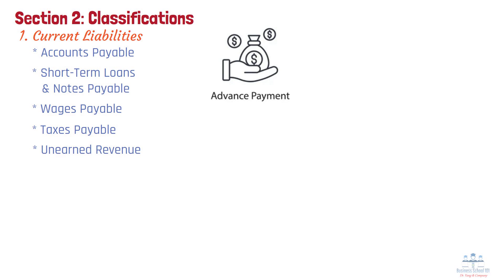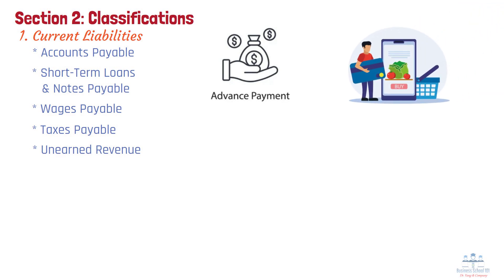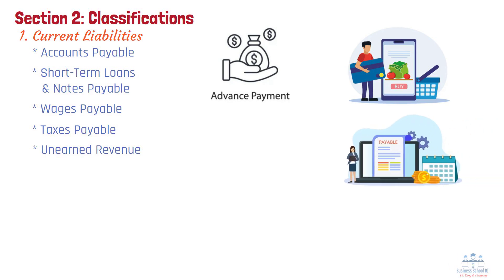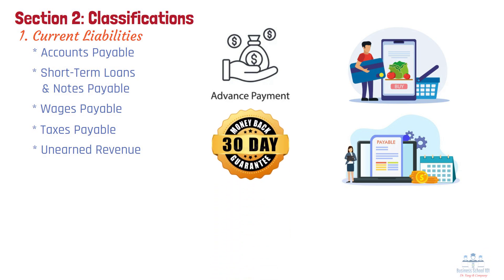For example, imagine a restaurant chain that orders fresh produce from suppliers on credit. The money owed to suppliers for these ingredients is recorded as accounts payable, a current liability. Since the restaurant must pay the supplier within 30 days, this obligation is considered short-term.